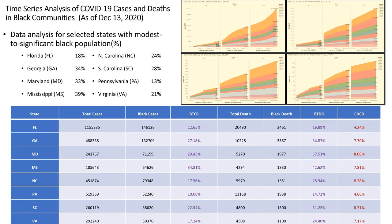The table is a source of concern. For the states considered, we show total cases, Black cases, BTCR, total deaths, Black deaths, BTDR, and CHCD. In Florida, as of December 13, total cases exceeded one million, of which Black cases were approximately 146,000. The BTCR — Black cases to total cases — was 12.65. Total deaths were over 20,000, of which Black deaths yielded a BTDR of 16.89.